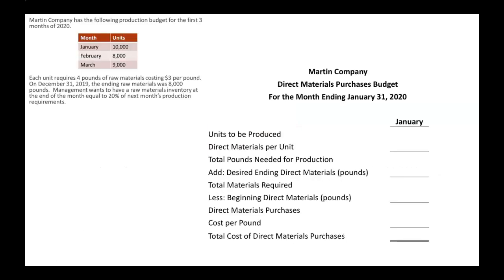We have all the information we need in the upper left corner, and this is what your direct materials purchases budget will look like. The first line is units to be produced — in January, there are going to be 10,000 units produced. We got that from the table that was given to us. The next line is direct materials per unit, which is how much material is required for one unit. Each unit requires four pounds of raw materials, so this is where that four comes into play.